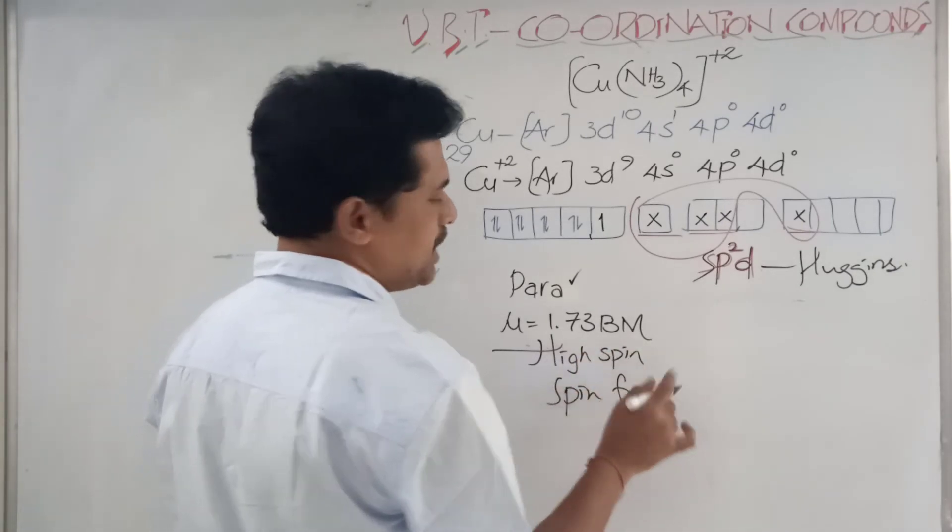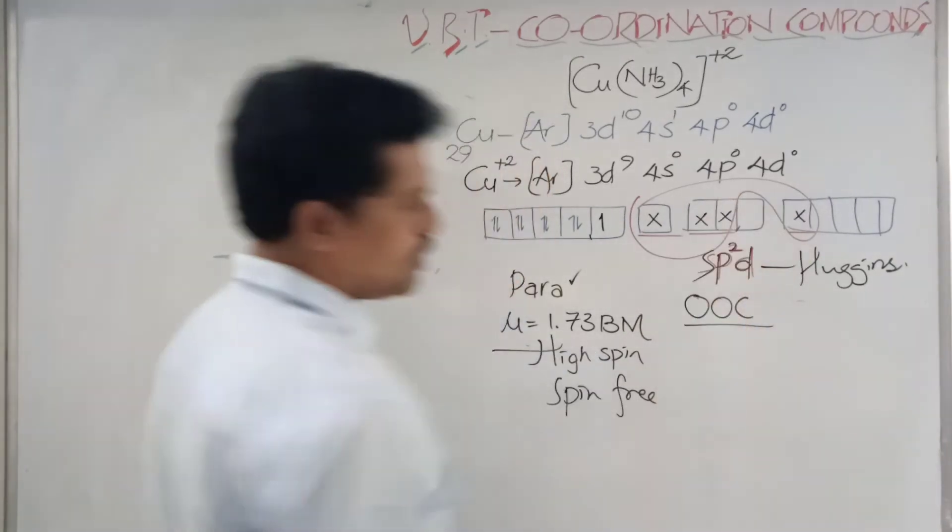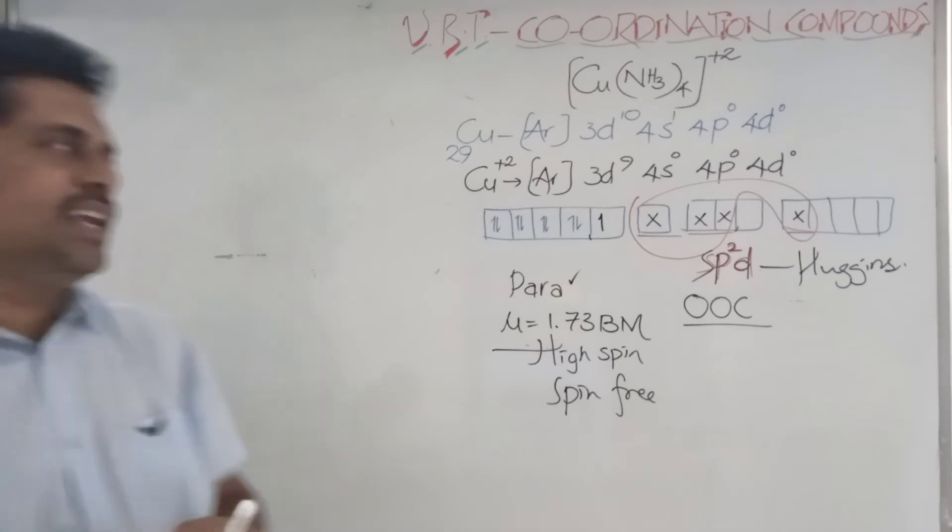But in place of inner orbital complex, now you have to say this is outer orbital complex. Only one s orbital, two p orbitals, one d orbital.